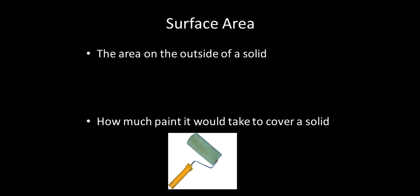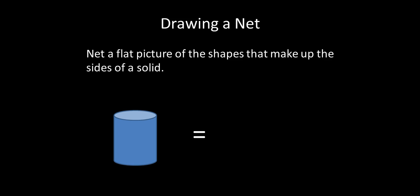Let's go ahead and take a look first at surface area. The surface area is the area on the outside of a solid. So for example, how much paint would it take to cover that solid? It's just the covering around the outside of it. A good way to think about it is paint.